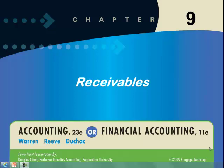Chapter 9 is on receivables. We're continuing looking at chapters — we've got the cash chapter, inventory chapter, and now the receivables chapter. Receivables are amounts that people owe us, and people don't always pay us what they owe us, so we call those bad debts. We've got two methods to account for those: the direct write-off method and the allowance method. The direct write-off method is the easy method, but you usually can't use it if the amount is significant — you have to use the allowance method, which is more of an estimate every period of what you may not collect. That's the GAAP-approved method for significant amounts.